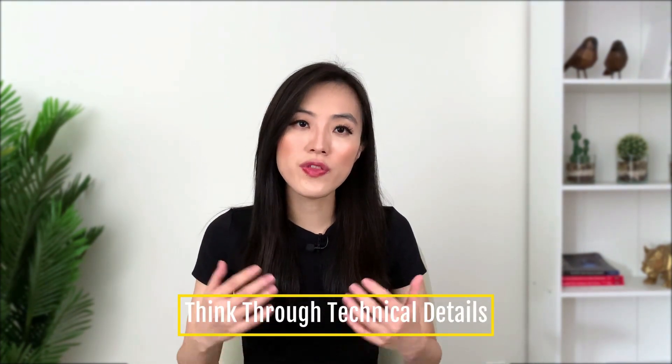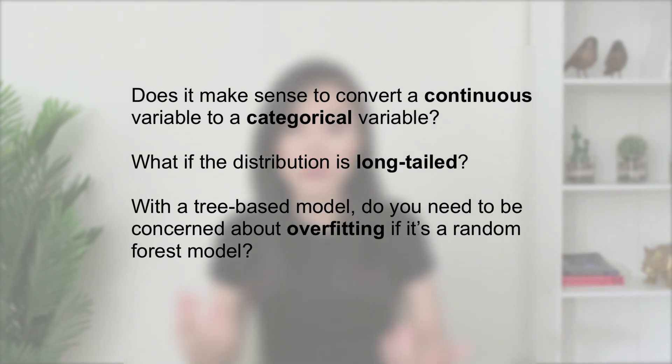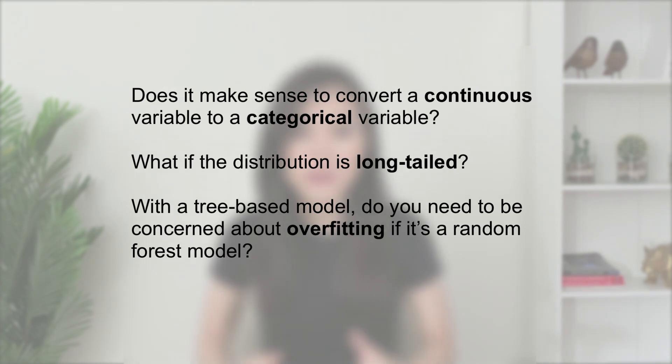The first three tips should help you decide which project to talk about. But now that you have picked a project, how do you prepare to present it? My fourth tip is to think through the technical details of a project. You likely won't have time to explain every technical aspect, but you want to ensure that you have a thorough understanding of everything you do choose to talk about. You will often be asked follow-up questions in the Q&A session or during the presentation. For instance, an audience might ask things like: does it make sense to convert a continuous variable to a categorical variable? What if the distribution is long-tailed? Or with a tree-based model, do you need to concern about overfitting if it's a random forest model? Make sure that you are comfortable enough with all the technical details so that you can answer follow-up questions.